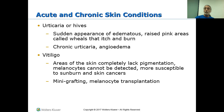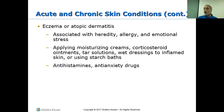Eczema, also known as atopic dermatitis, can be hereditary, as a result of allergy, emotional stress, or a noxious stimulus from the environment — an irritant that gets onto the skin. Treatment includes moisturizing creams, corticosteroids to reduce inflammation, tar solutions, starch baths. Some of you may recall hearing about oatmeal baths for chicken pox — that's to reduce the inflammation and itching, since there's starch in the oatmeal. Antihistamines may be used, and anti-anxiety drugs both to treat the cause of the itching and the effect of the itching. Imagine itching and never stopping — could that cause some anxiety?